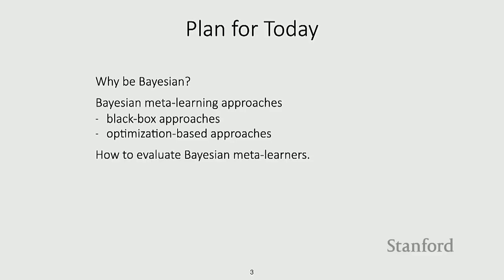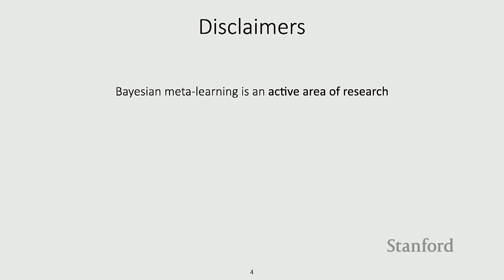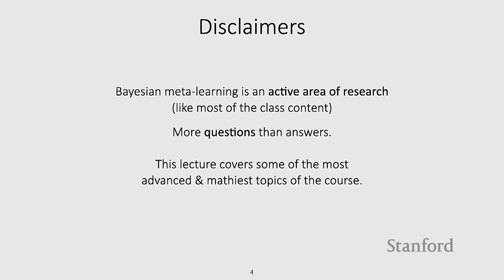For today, we're going to be talking about Bayesian meta-learning. First we'll talk about why it can be useful to be Bayesian and what that thinking allows us to do. We'll talk about Bayesian meta-learning approaches, including black box approaches and optimization-based approaches, and then we'll also talk about how we can evaluate Bayesian meta-learners. The goals are to understand the interpretation of meta-learning as inference in Bayesian graphical models, and to understand techniques for representing uncertainty over parameters and over predictions. This is an active area of research and covers some of the most advanced content of the course, so I definitely encourage you to ask questions.